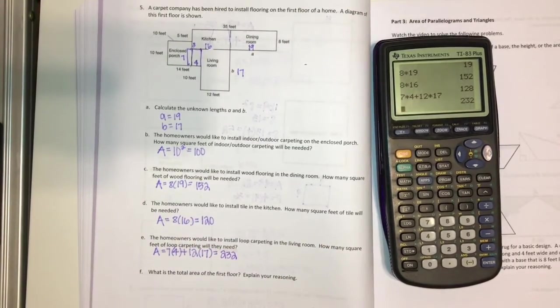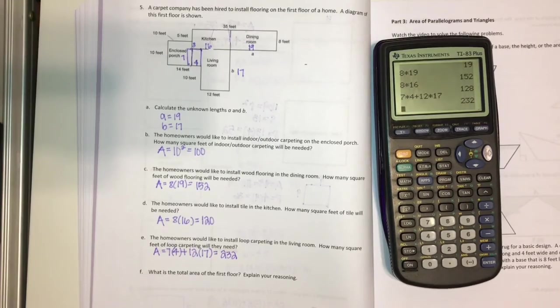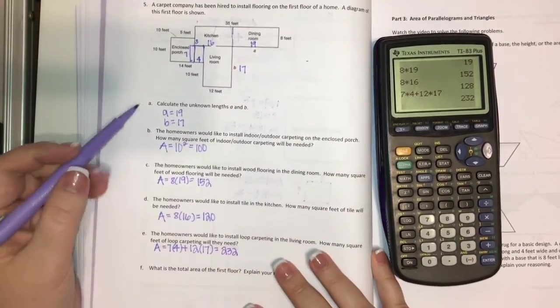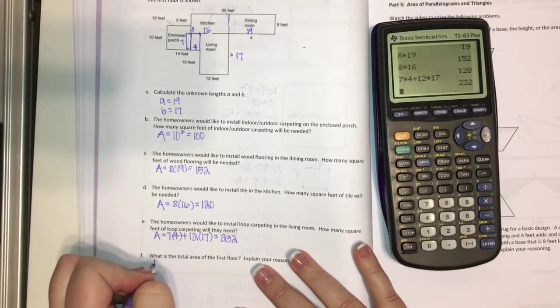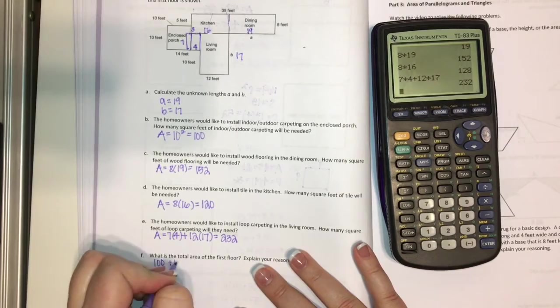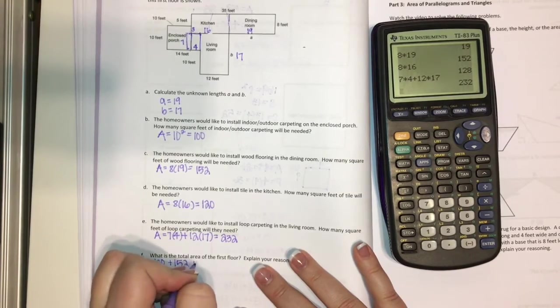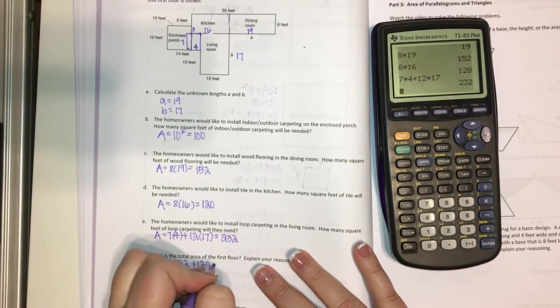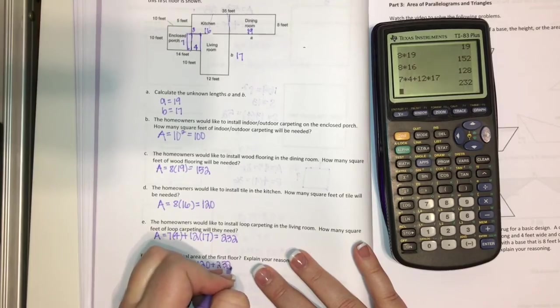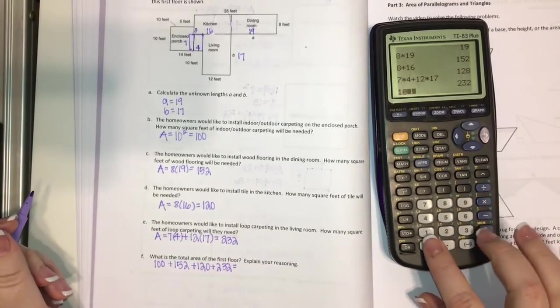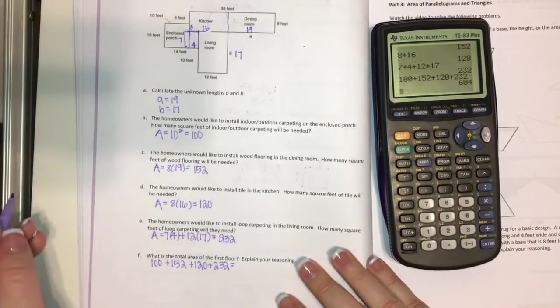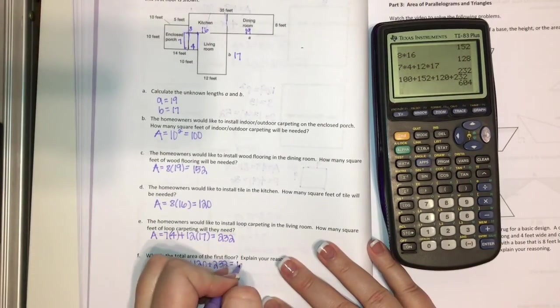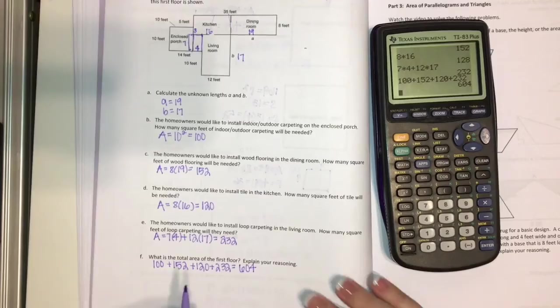Our last question says, what is the total area of the first floor? Well, we found the area of each part. So now we can just take these and add them all together. So we have 100 plus 152 plus 120 plus 232. The total square feet would be 604 square feet.